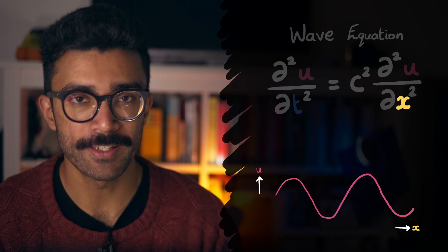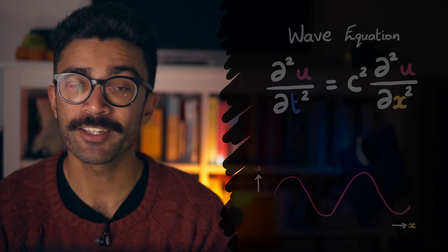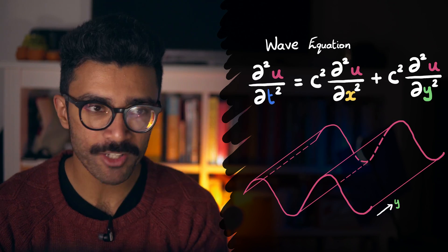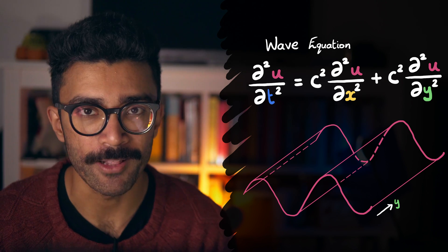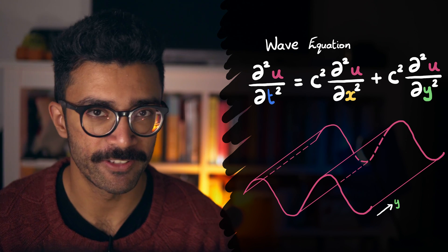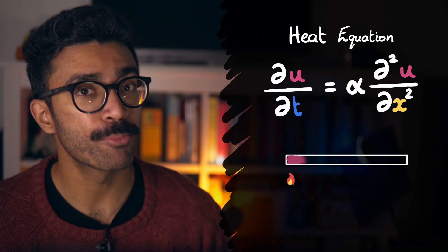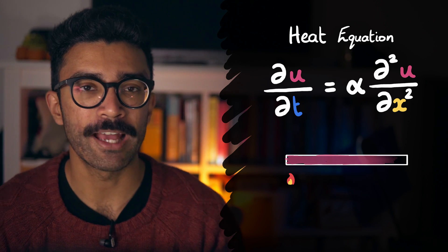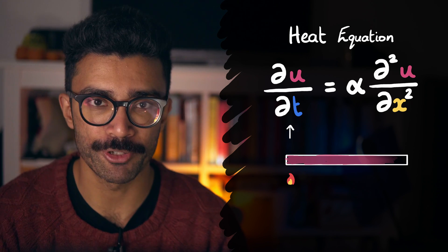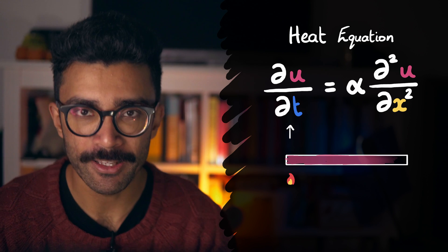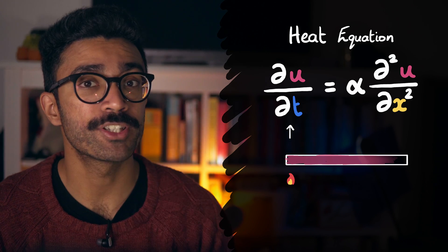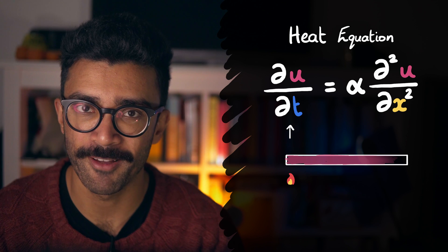This equation can also be extended to more than one spatial dimension as well. Another example using similar physics but a different relationship is the heat equation. This one looks at the temperature of an object at different points in space and over time. Notice how this time we have the first derivative of the temperature with respect to time. This simply reflects the physical behaviour of heat and how temperature changes occur in objects over space and time.